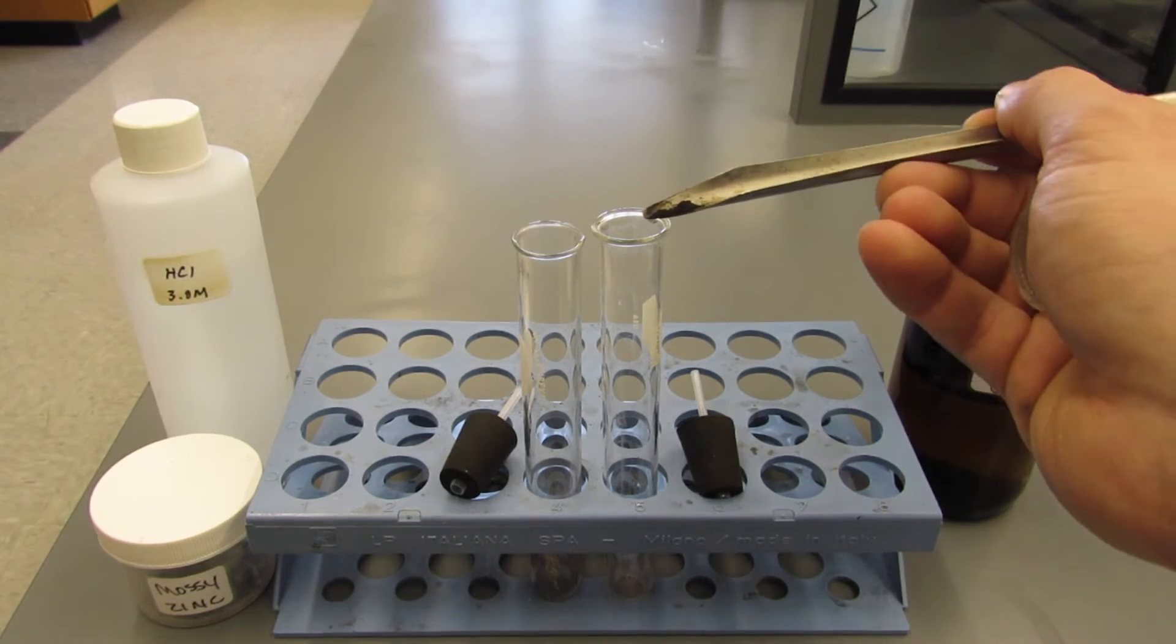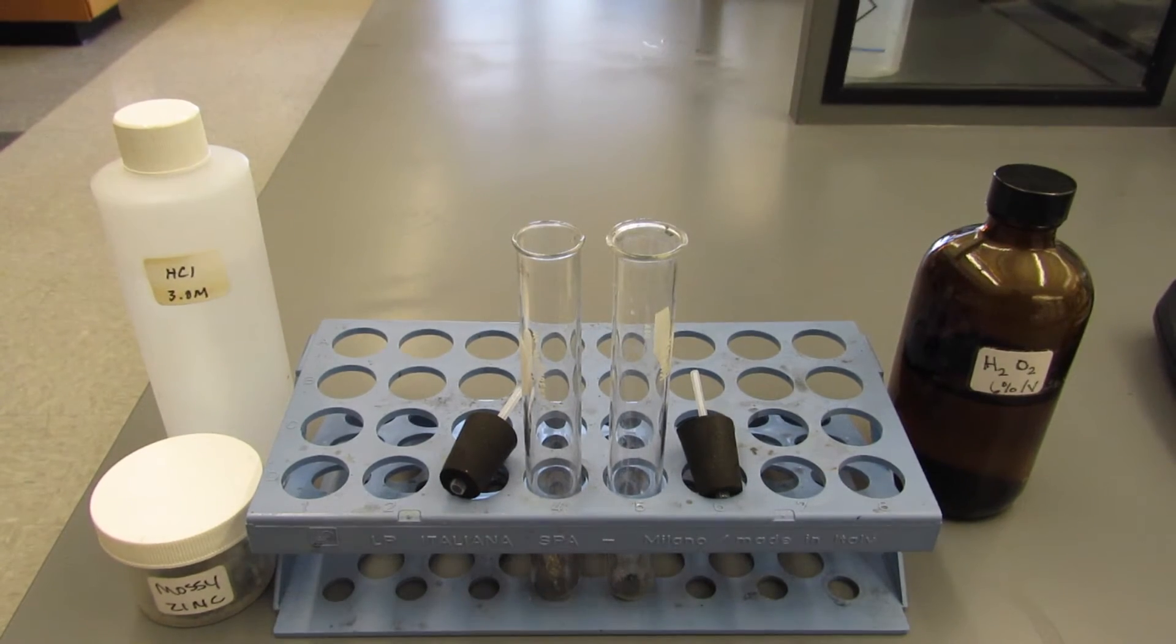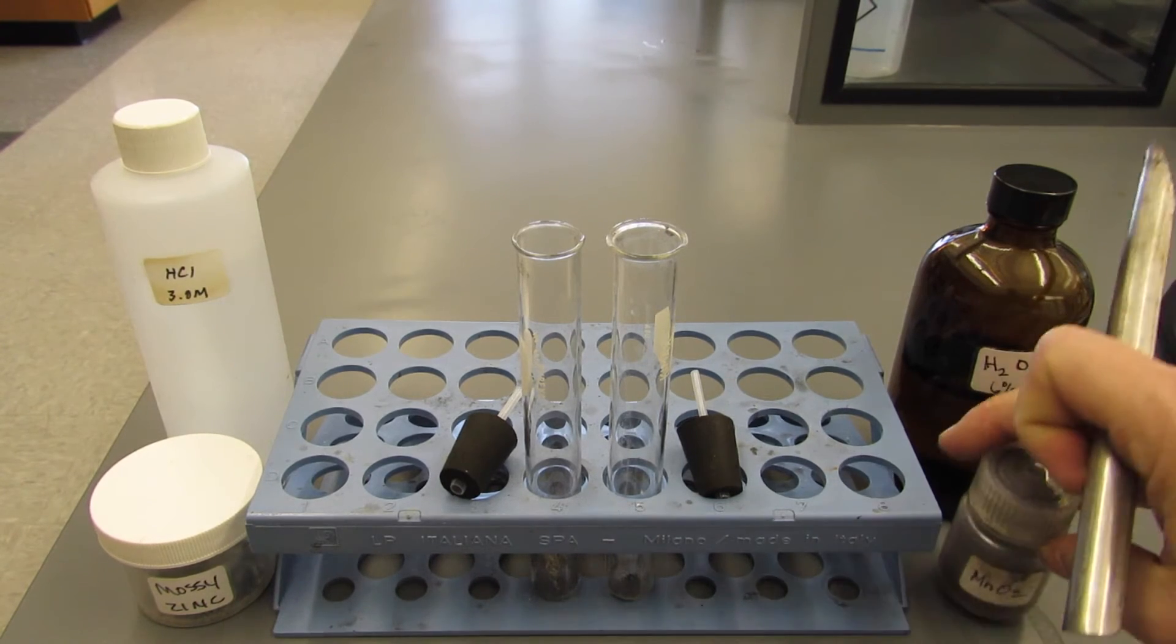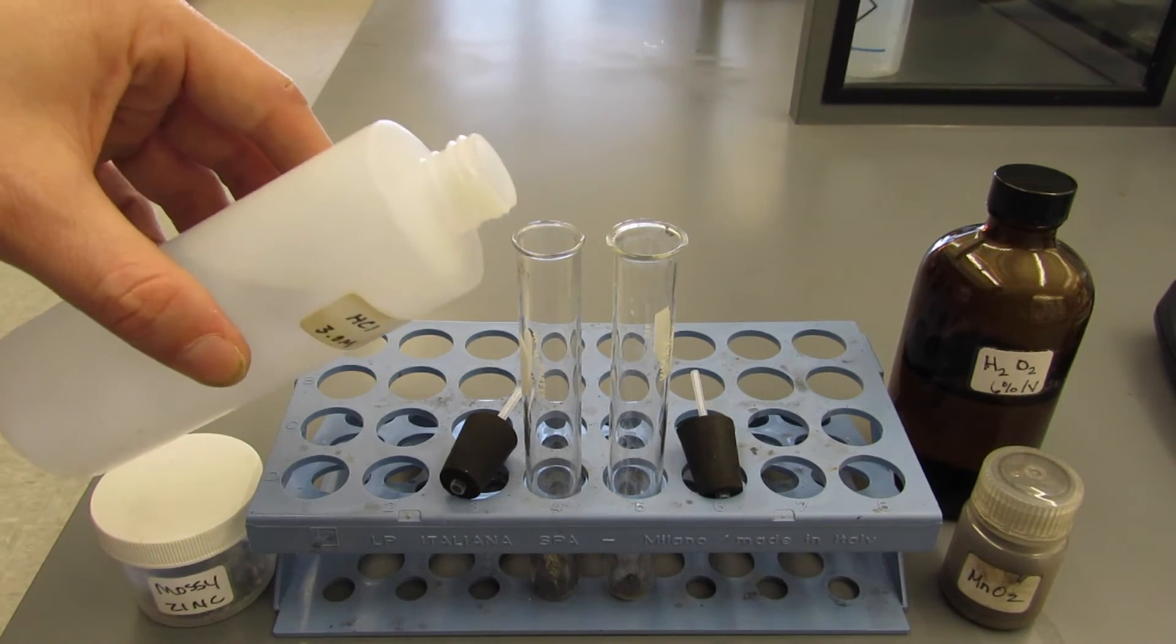We're going to add hydrochloric acid to the tube that has the zinc in it and we're going to add hydrogen peroxide to the tube which has the manganese in it.